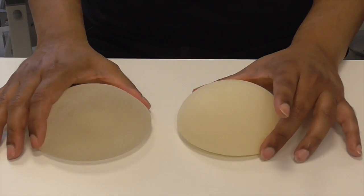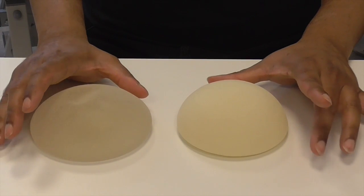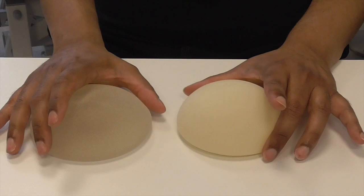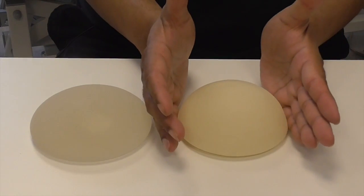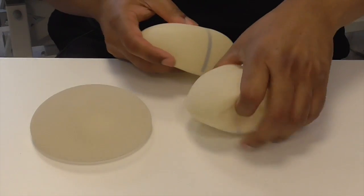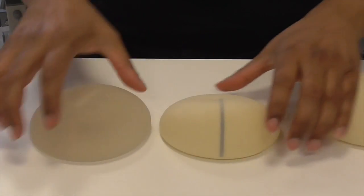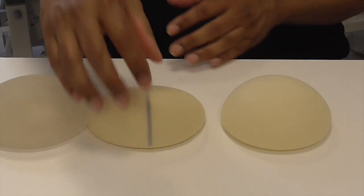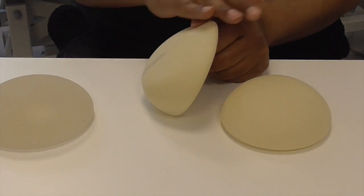Now these two implants we have are what are called round implants, meaning that they're hemispherical, and many people use these if it's suitable for the patient. But other surgeons like to use what is known as an anatomical implant.